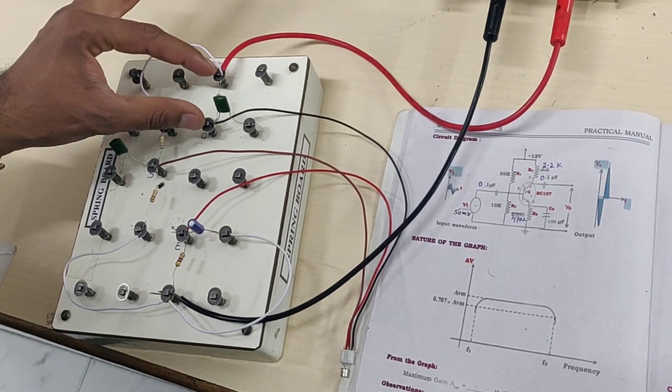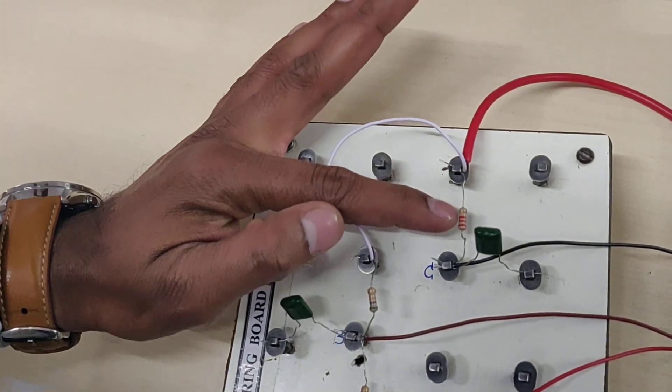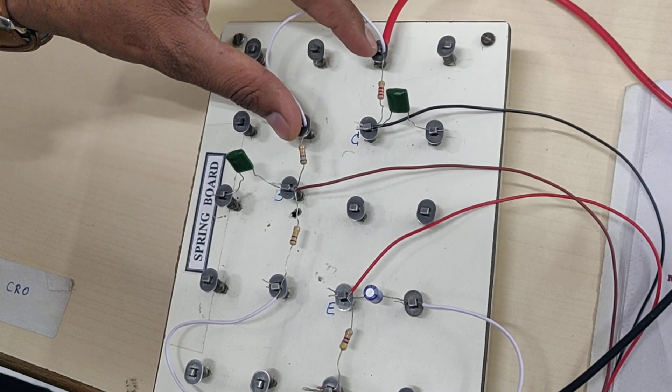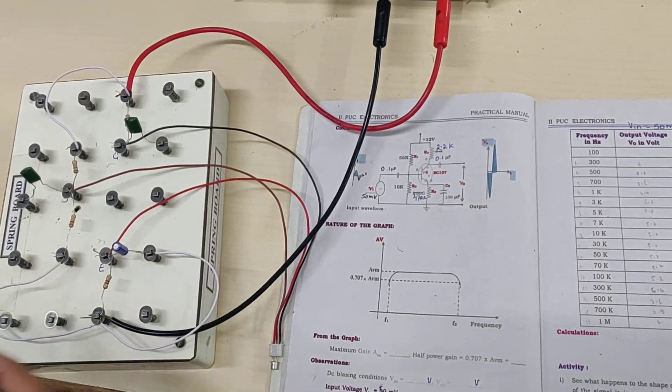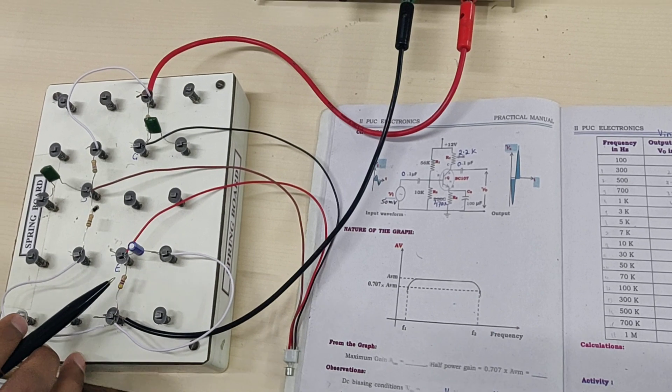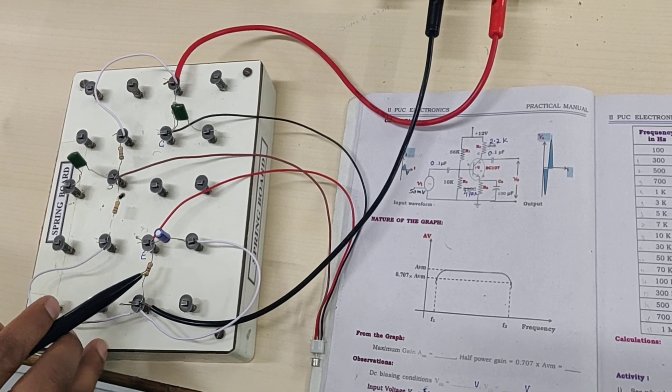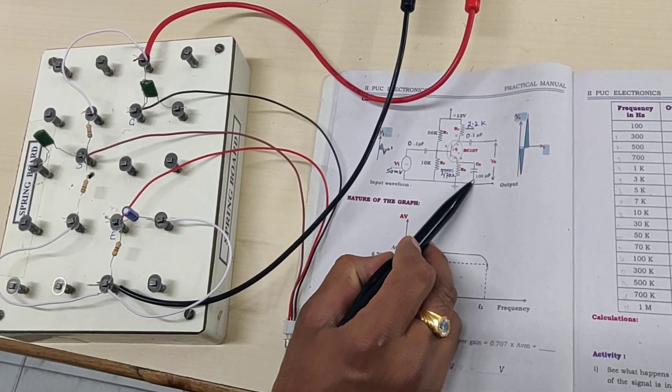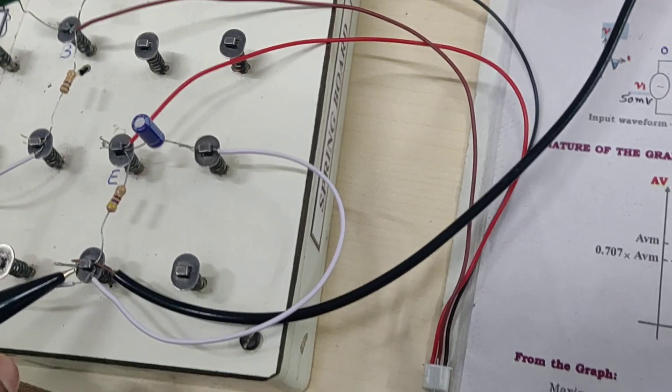Now we have RC, which is a 2.2k resistor. The color coding is red-red-red for 2.2k. Both resistor tops should be connected and shorted, going to plus 12V. Similarly, at the emitter end we have to use a 470 ohm resistor. The color code is yellow-violet-brown. Across the emitter we are using a 100 microfarad capacitor.